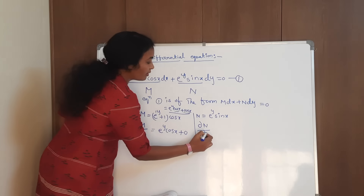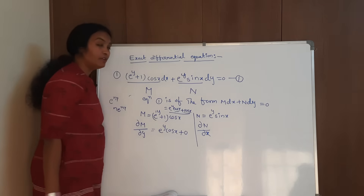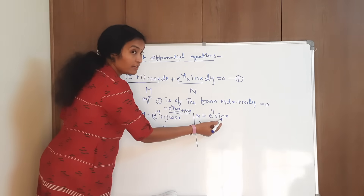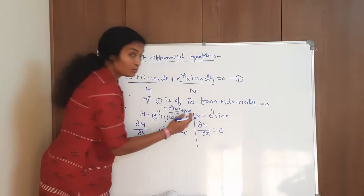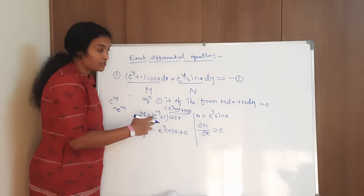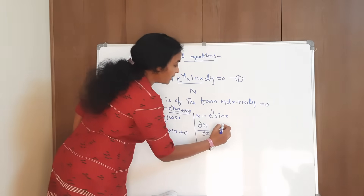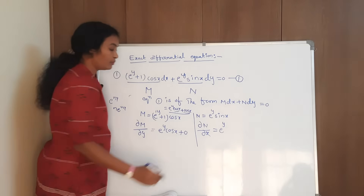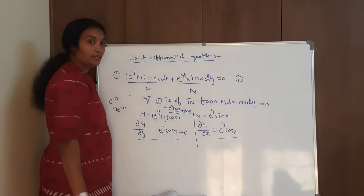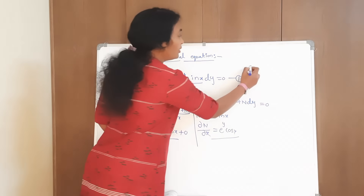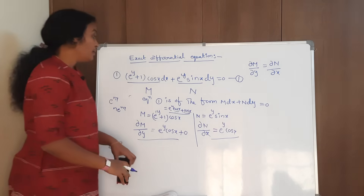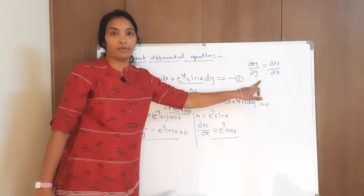Now find ∂N/∂x — differentiate N with respect to x partially. In partial differentiation, the other variable is treated as constant, so e^y remains as it is. The differentiation of sin(x) is cos(x). So ∂N/∂x = e^y cos(x). Observe: both results are the same. Both are the same means ∂M/∂y = ∂N/∂x, so the given equation is the exact differential equation.